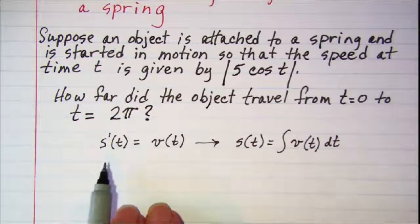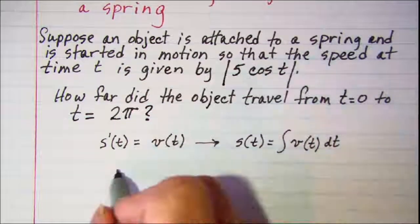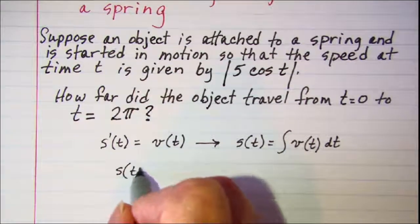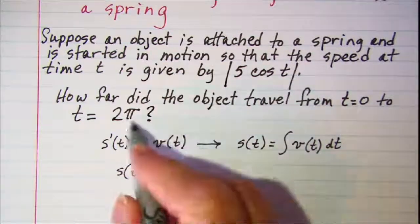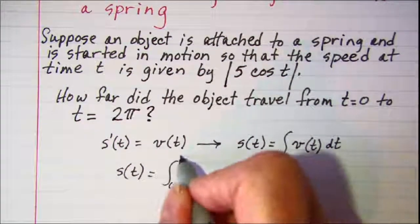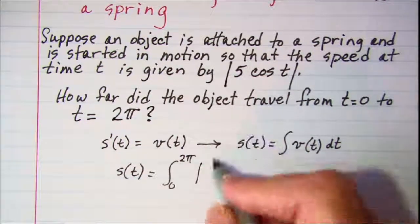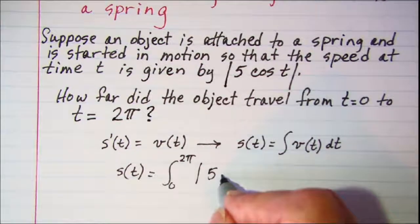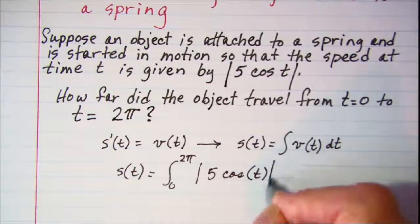So we need to evaluate the distance s as the integral from 0 to 2 pi of the absolute value of 5 times the cosine of t dt.